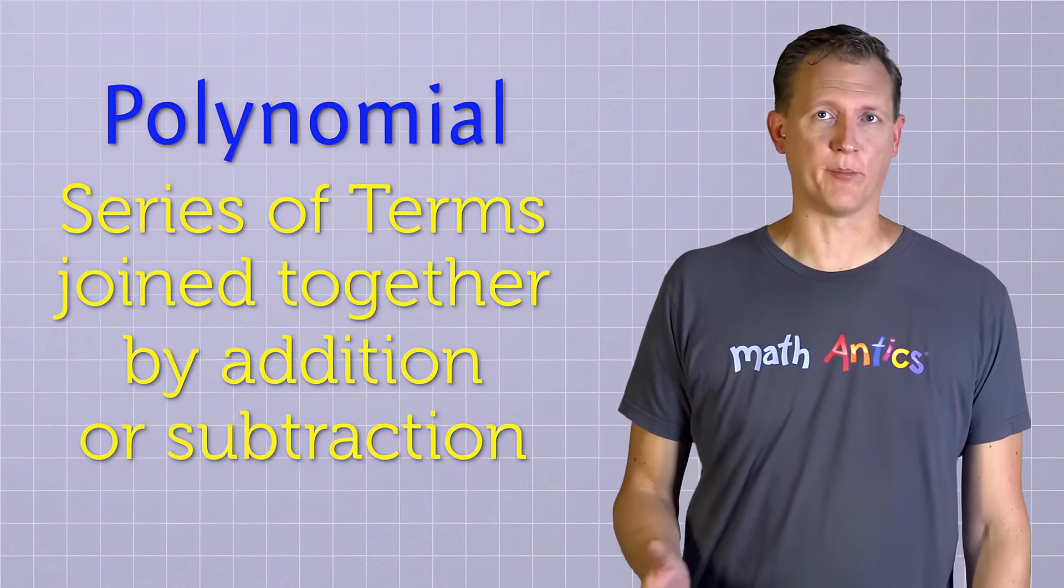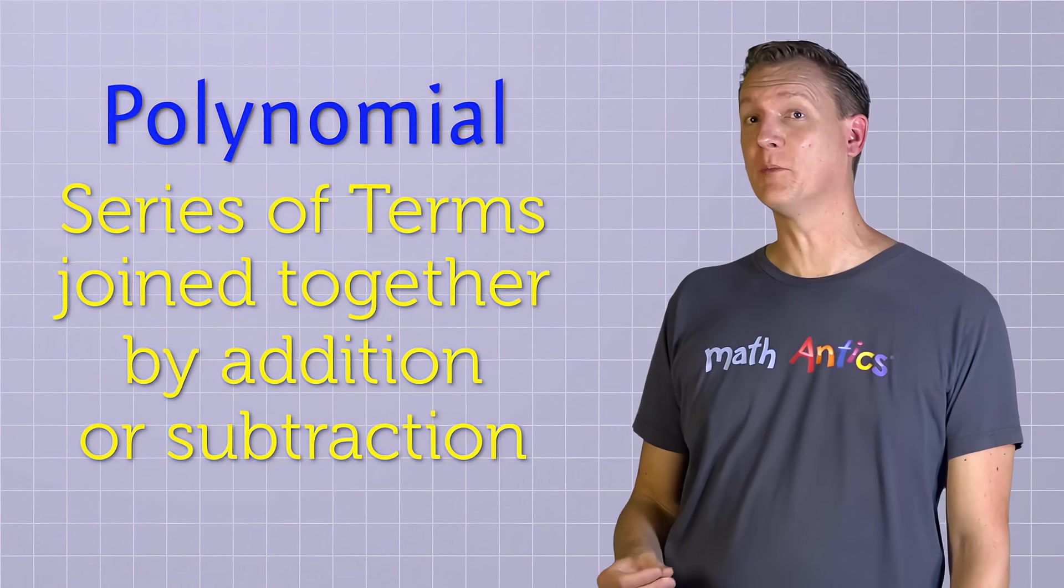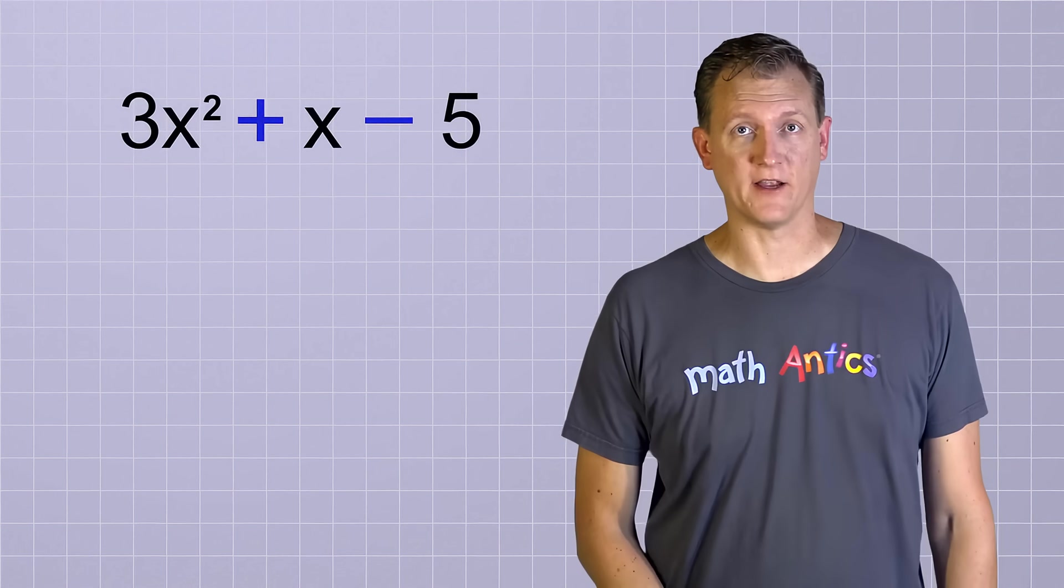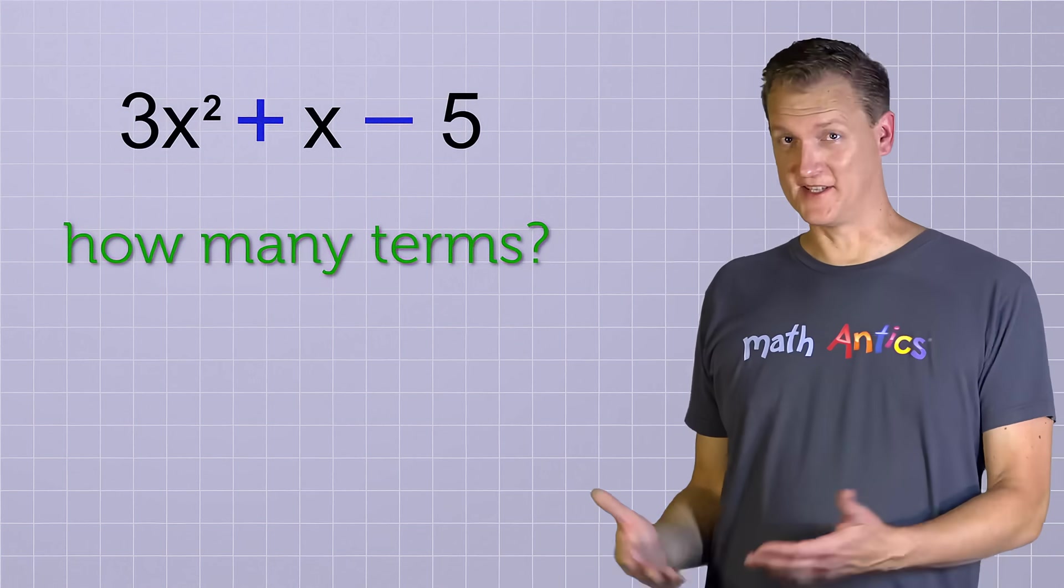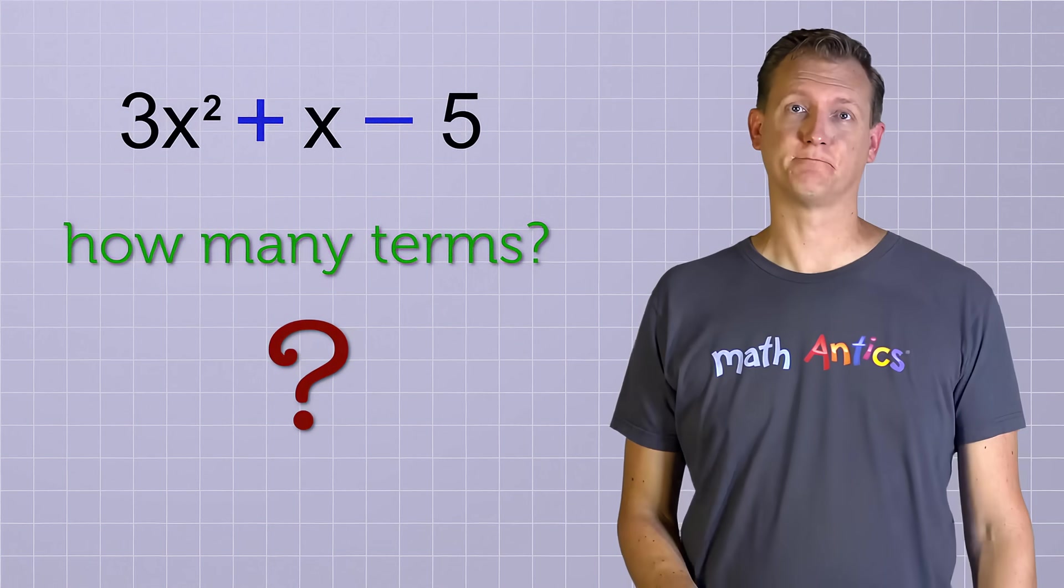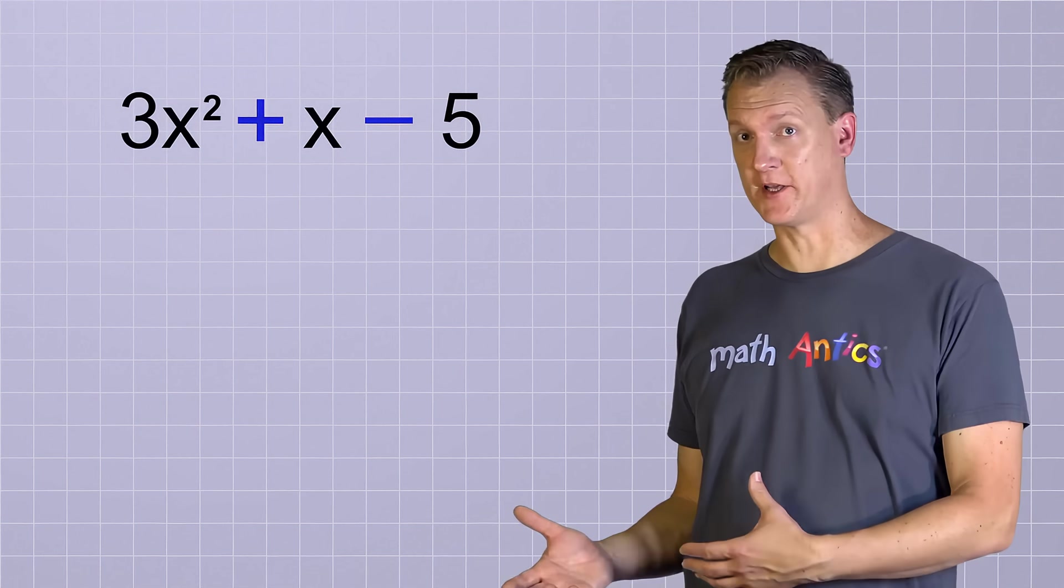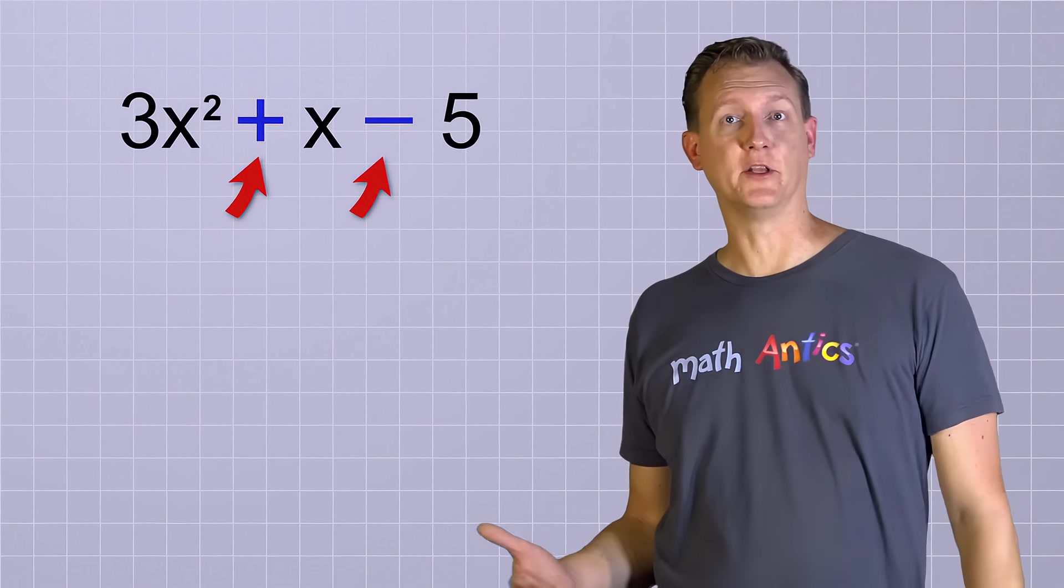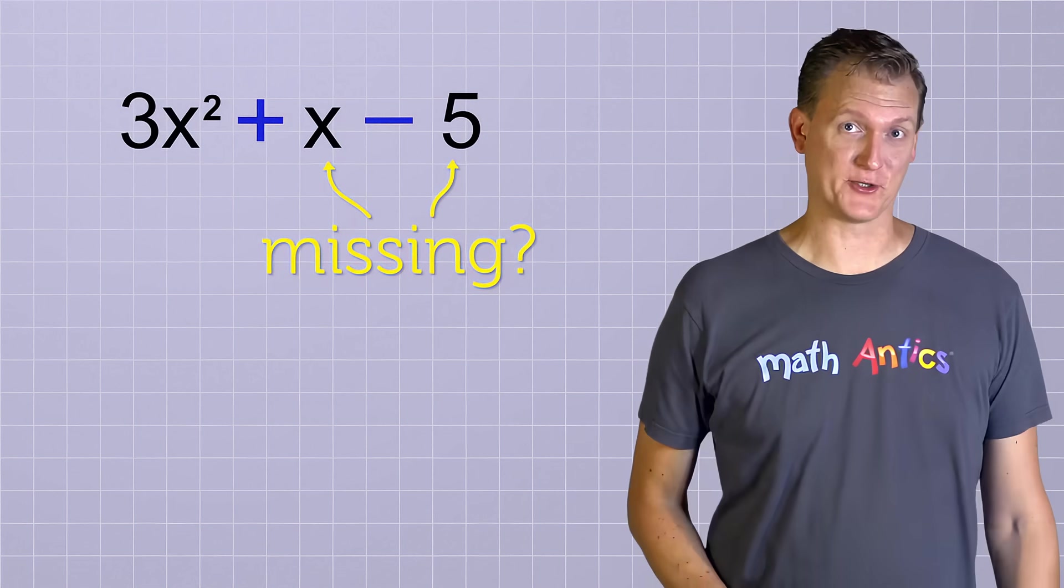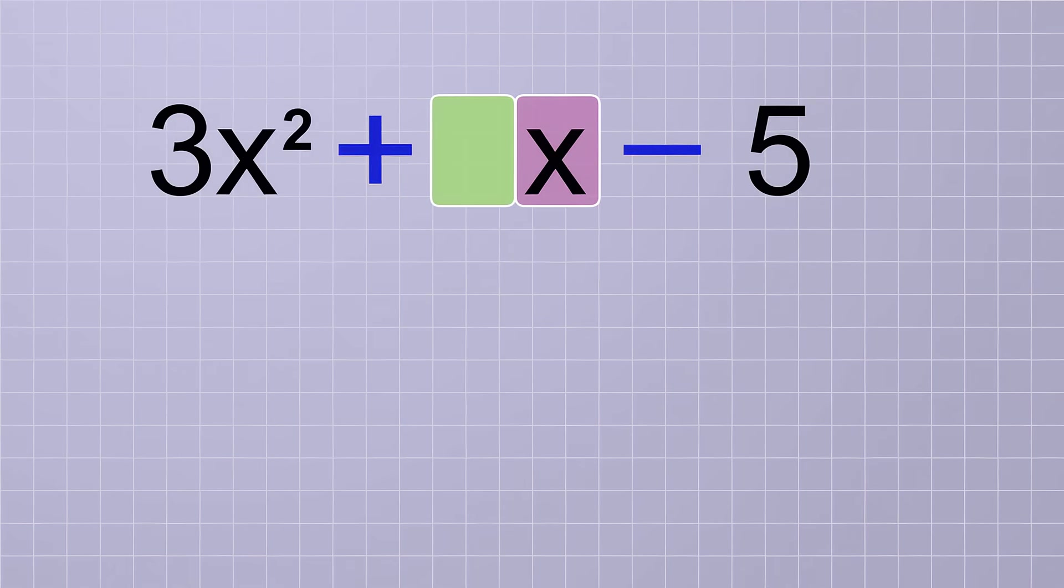Now, let's see a typical example of a polynomial that will help us learn a little bit more about terms. 3x squared plus x minus 5. How many terms does this polynomial have? Well, based on what we've learned so far, you're probably not quite sure. If the terms are the parts that are joined together by addition or subtraction, then this should have three terms. But it looks like there's something missing with the last two terms. This middle term is missing its number part. And this last term is missing its variable part. That doesn't seem to fit with our original definition of a term. What's up with that?